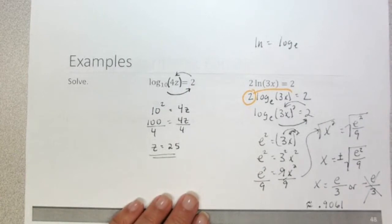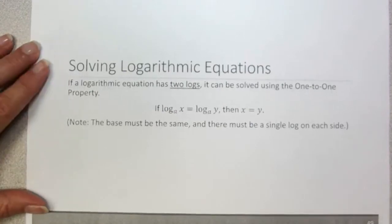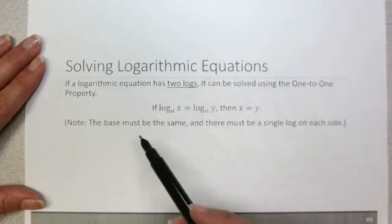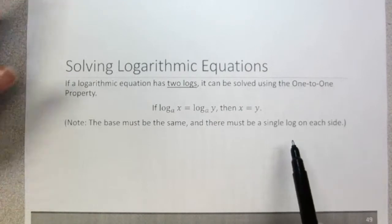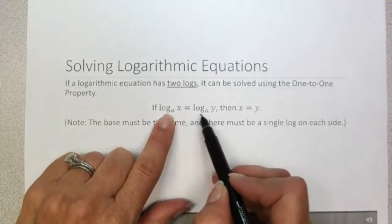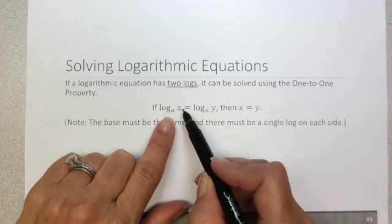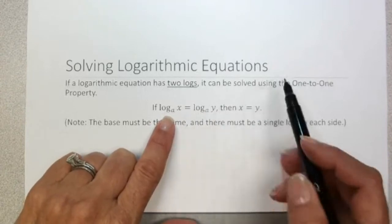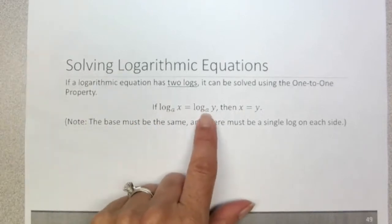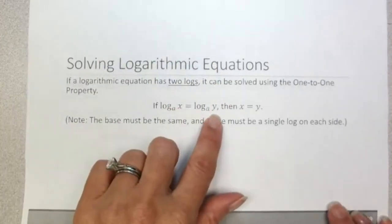What do we do with equations that have more than one logarithmic expression? If there are two logarithmic expressions, we can solve using the one-to-one property. We put one log on each side of the equation, and if they have the same base, then if log base a of x equals log base a of y, then x must equal y. So if we can manipulate the equation so that one log equals another log, we can use the one-to-one property and set the arguments equal.